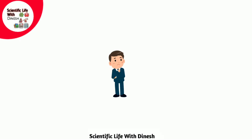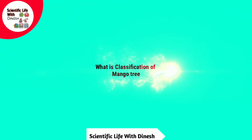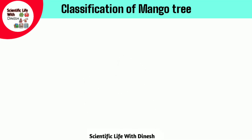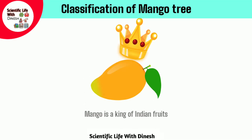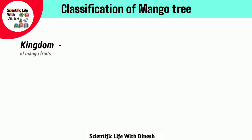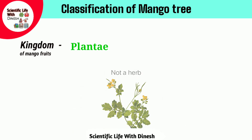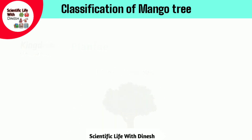Today I am talking about what is classifications of mango tree. You know that mango is a king of Indian fruit. The kingdom of mango fruit is Plantia, meaning it is a complete plant. It is not a shrub, not a herb, it is a complete plant.